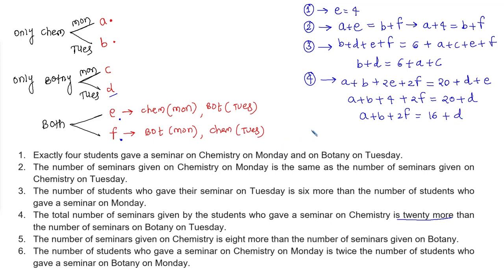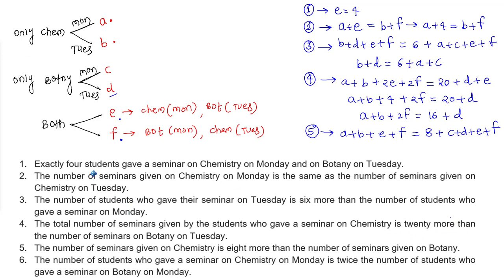Statement 5: total seminars on chemistry (A plus B plus 2E plus F... that is A plus B plus E plus F) equals 8 more than seminars on botany (C plus D plus E plus F). Cancelling E plus F from both sides gives: A plus B equals 8 plus C plus D. This is equation 5.